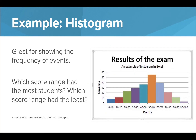A histogram is used to show the frequency of events. This is used a lot to display scores on a test because the scores can be grouped together as shown. Which score range had the most students? It looks like it's that orange bar — and this exam was pretty tough. About 55 students scored between 50 and 60. Which score range had the least? It's the light purple all the way on the right — only a few students scored between 90 and 100.